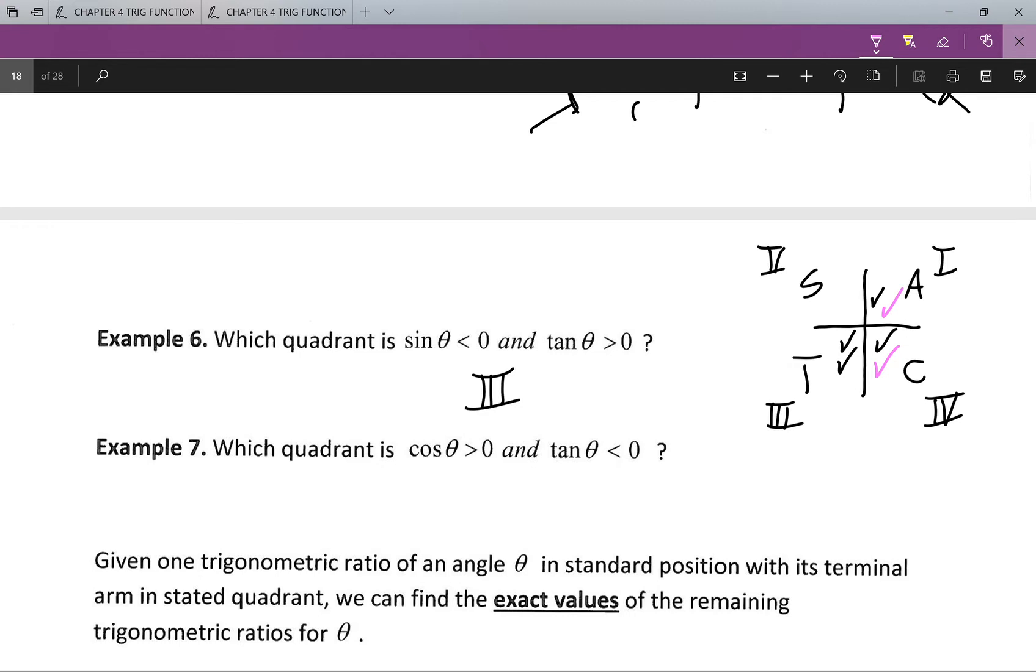And tan theta is negative in two and four. So this means we're going to be in quadrant four right there.